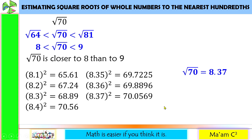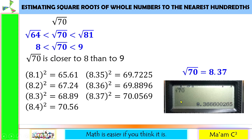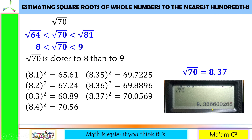Let us check using your calculator. The square root of 70 is 8.3666 and so on. Rounding to the nearest hundredths — up to two decimal places — since 6 is greater than 5, we round off this 6 to 7. So the answer is 8.37.